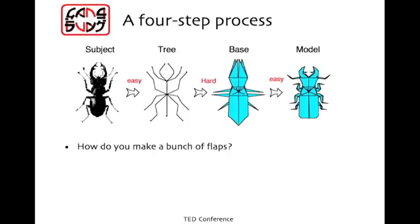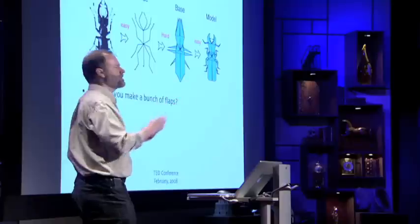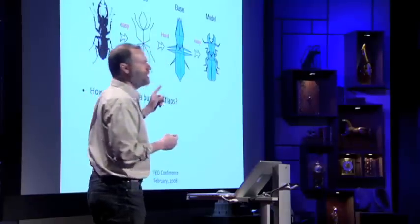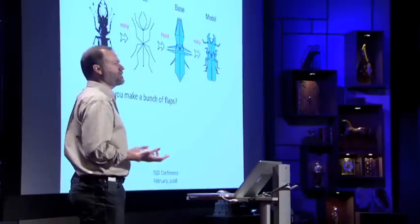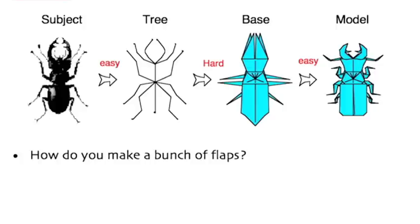Now the first step, pretty easy. Take an idea, draw a stick figure. The last step is not so hard. But that middle step, going from the abstract description to the folded shape, that's hard. But that's the place where the mathematical ideas can get us over the hump. And I'm going to show you all how to do that, so you can go out of here and fold something. But we're going to start small.